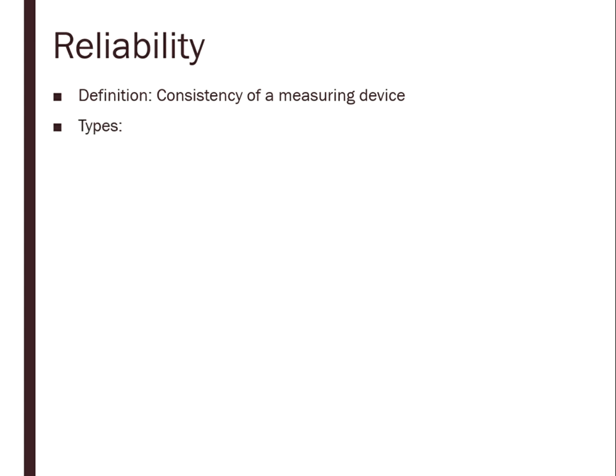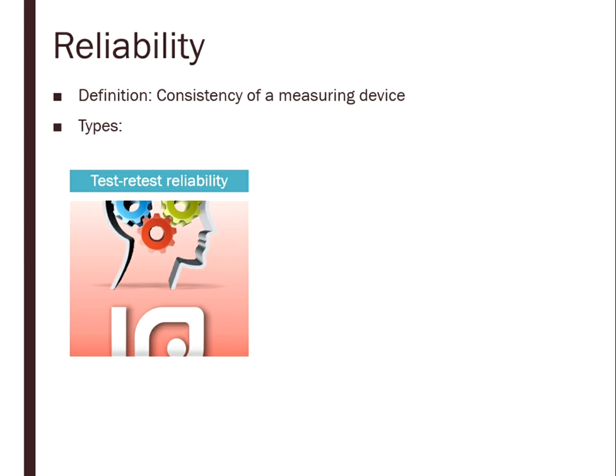There are different types of reliability. First, there's test-retest reliability, where you administer the test to an individual, wait some amount of time, and then test them again. If you have a reliable measure, you will end up with the same basic score both times. With IQ testing, for example, we can give a person a test as young as 16 and then administer it any time in the future, and they will score very close to the same score again.